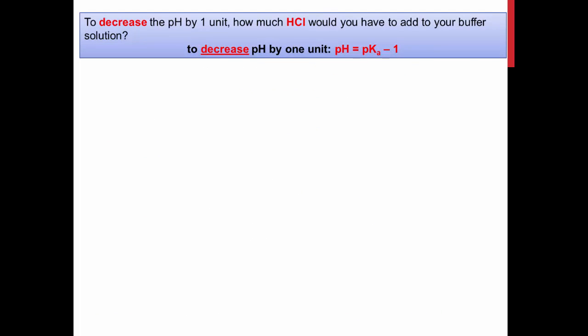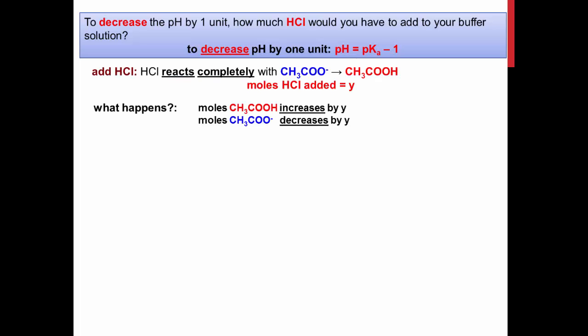The moles of hydroxide needed to decrease the pH by 1 unit are calculated similarly. In this case, the pH is being reduced by the acid, so the pH is equal to the pKa minus 1. In this case, hydrochloric acid reacts with acetate to form acetic acid. We will call the moles of hydrochloric acid Y.